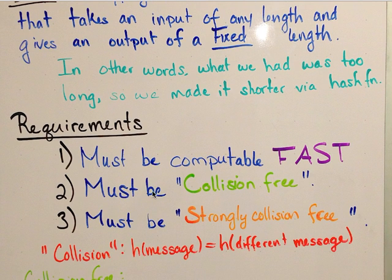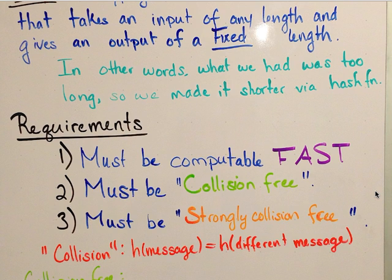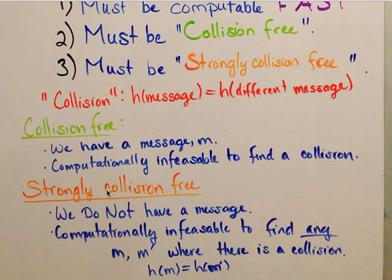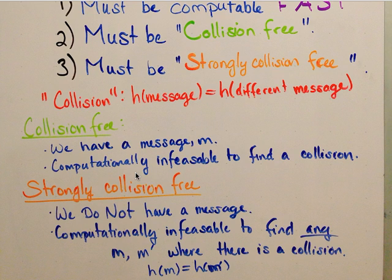The second and third requirements are it must be collision free and strongly collision free. Before we can understand what those are we have to understand what a collision is. A collision is when the hash of a message is equal to the hash of a different message — we call them m and m' — where we put two different messages into the function and got the same output. Collision free means it is computationally infeasible to find such a collision: given a message m, you cannot find an m' such that their hashes are equal.